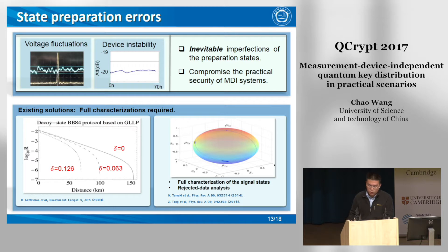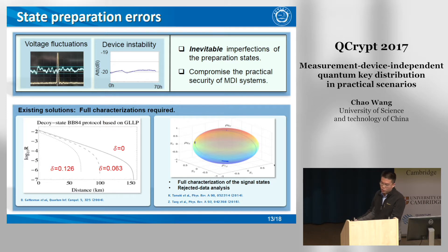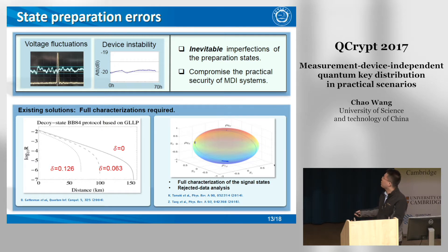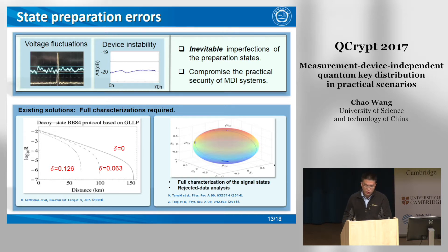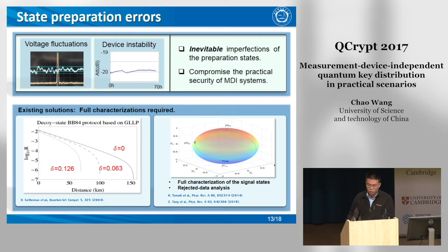Another important problem is the inevitable state preparation flaws. In real-life systems, the devices are not perfect and will change with time — applied voltages may suffer from drift fluctuations and so on. Under the condition of a secure measurement process, eavesdroppers may turn to attack the source side to steal secret information in the MDI system. To take source imperfection into consideration, previous works call for absolute characterization of the prepared quantum states, usually requiring additional trusted devices and resources, making the system complicated and impractical in real-world situations.